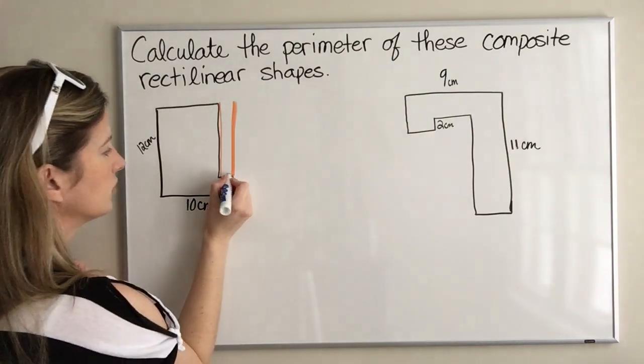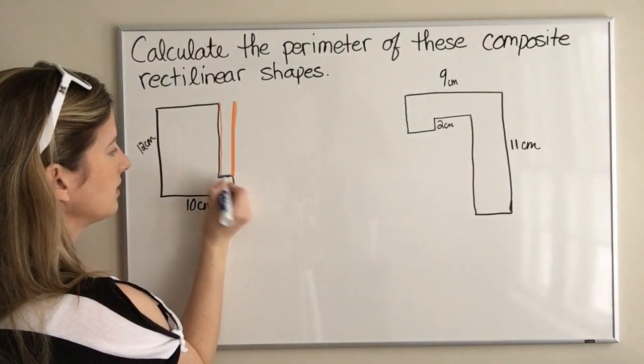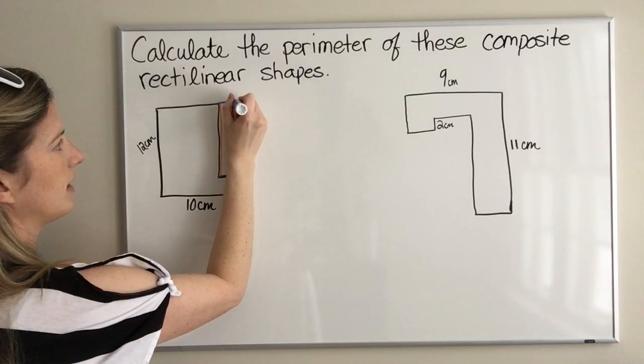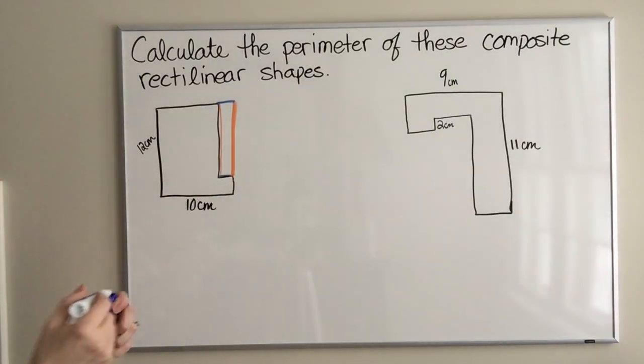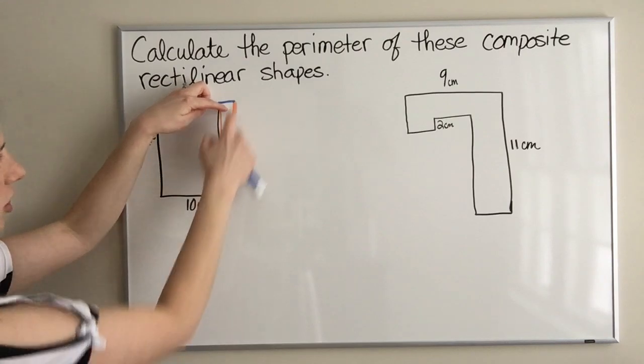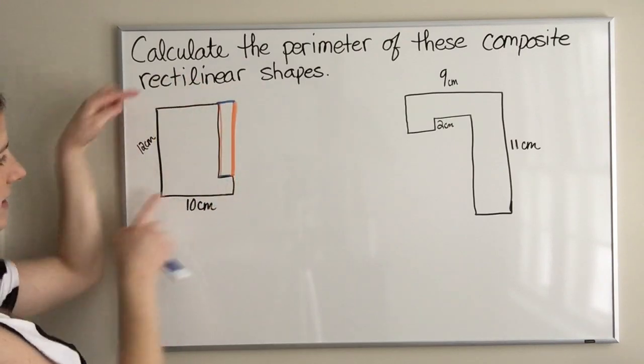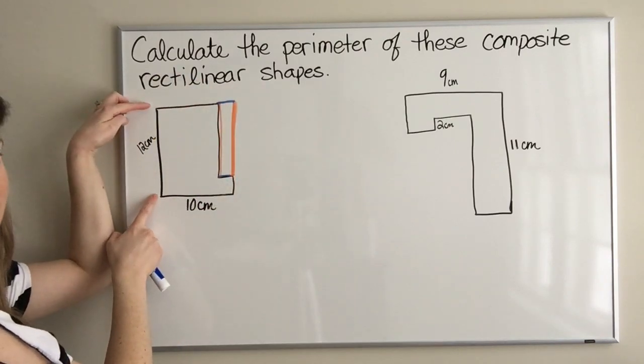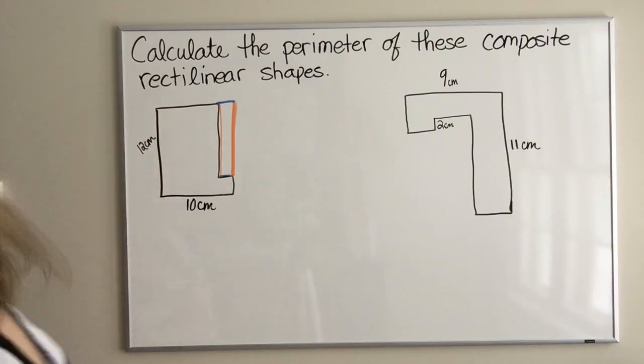I want you to think about that for a second. If we've taken this orange piece and we've just moved it here, we have kept this length the same as the other side, right? It hasn't changed, this is going to be 12 centimeters.